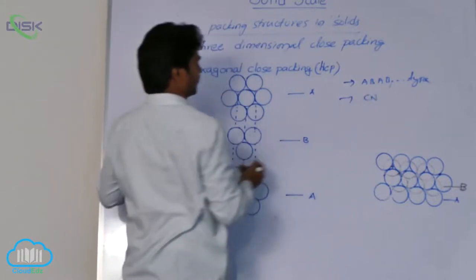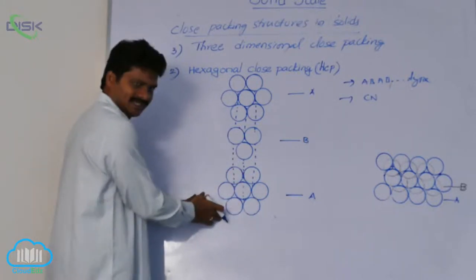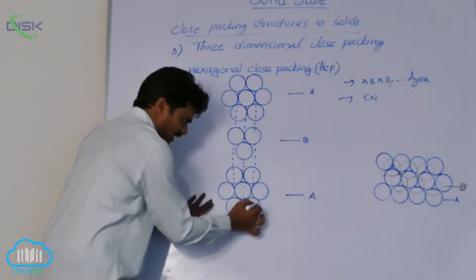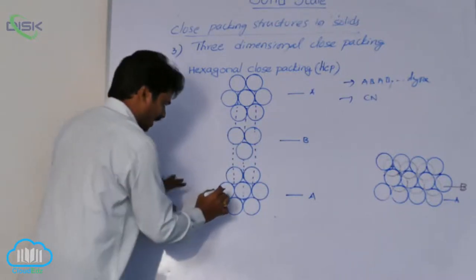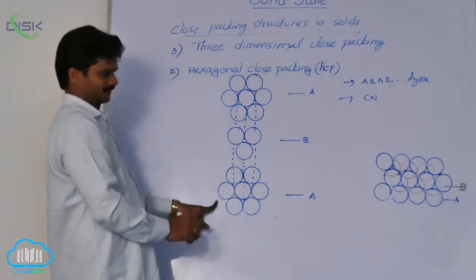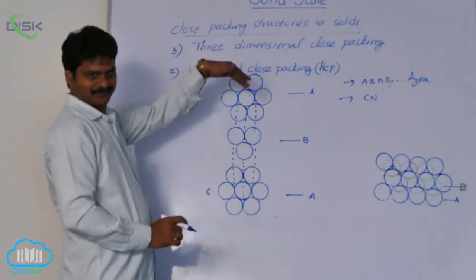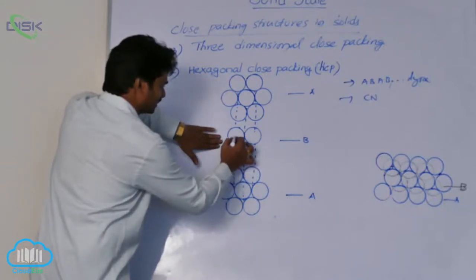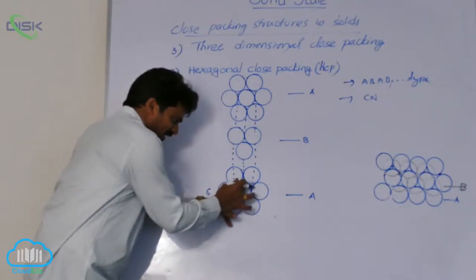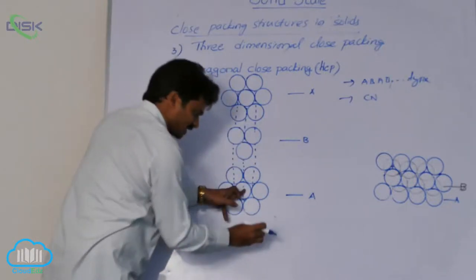Now, what is the coordination number in this geometry? In each layer, consider this central sphere. This sphere is in contact with 6 spheres in the same layer. The coordination number from the same layer is 6. From its above layer — layer B — these three spheres will be in contact with this middle sphere. So this sphere is in touch with 6 spheres in the same layer and 3 spheres in its above layer.